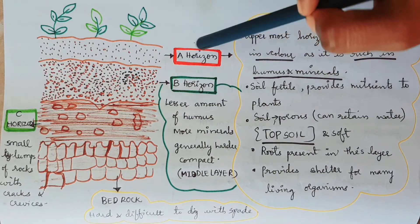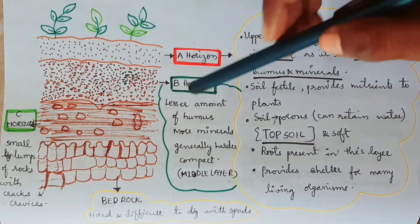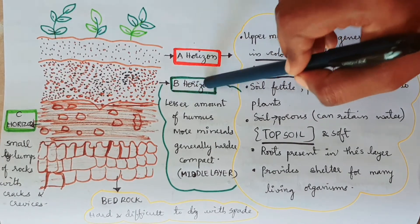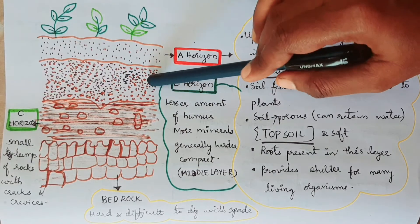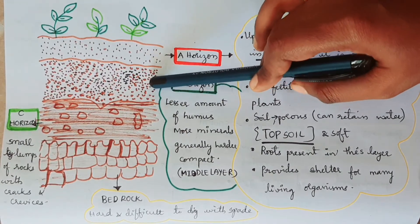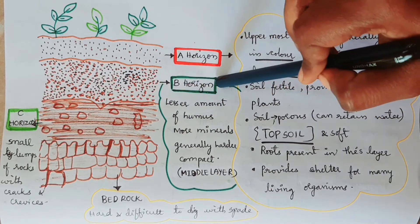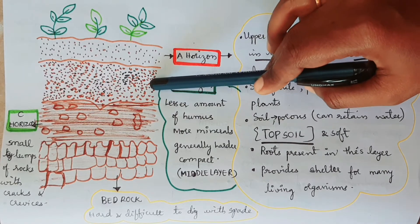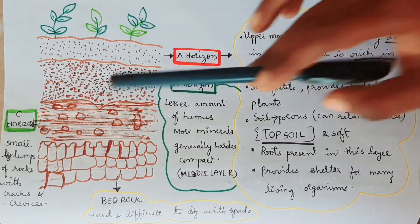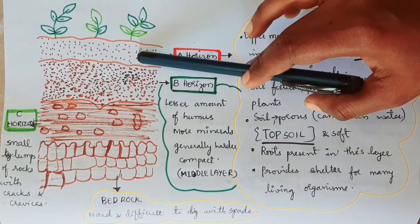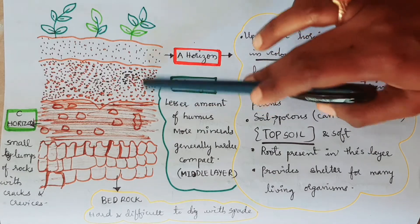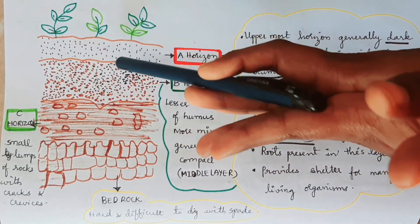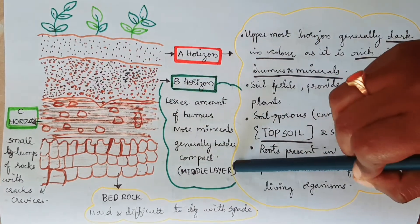A-horizon is the uppermost layer of the earth. Next is B-horizon, which lies below the A-horizon. In B-horizon, the soil has less humus but more minerals. The soil in B-horizon is harder and more compact compared to A-horizon. A-horizon is soft and porous; B-horizon is hard and compact with more mineral particles. B-horizon is the middle layer, and it is below A-horizon but above C-horizon.